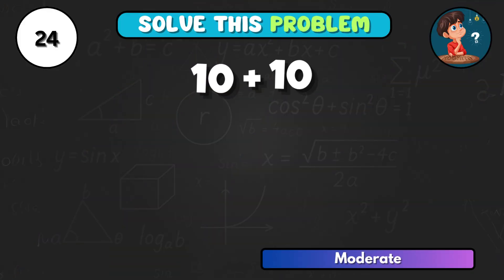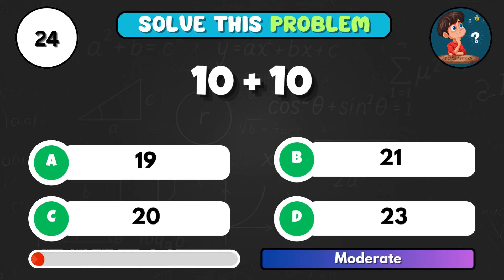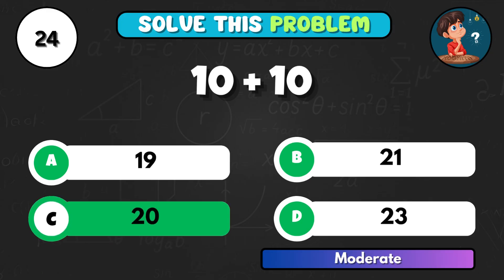10 added to 10 gives what? The correct letter is C, equal to 20.